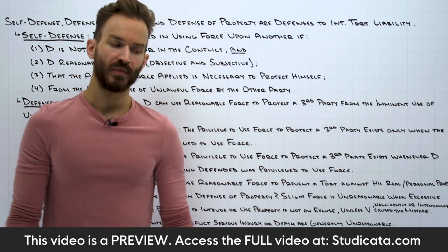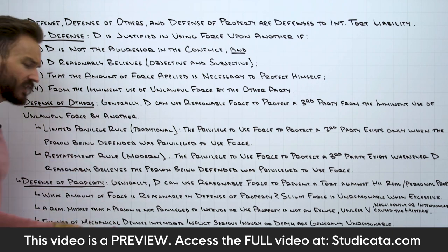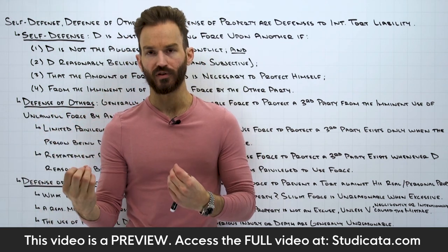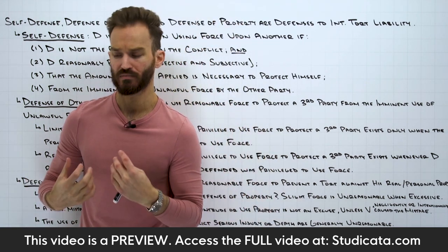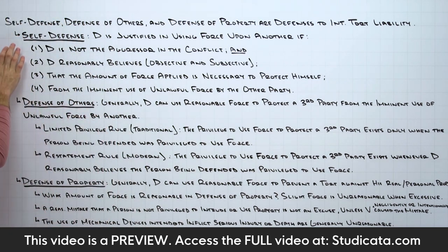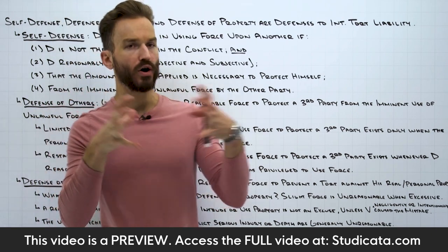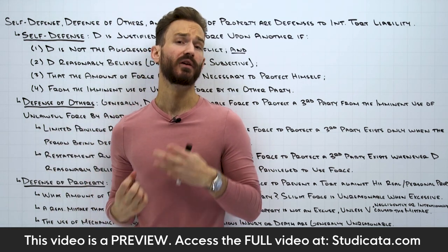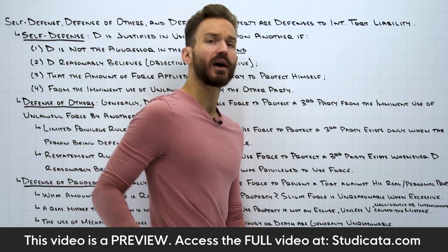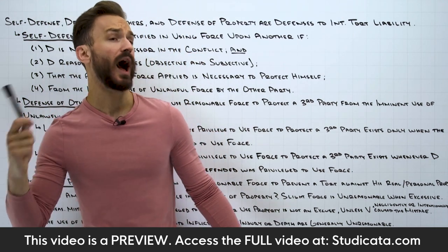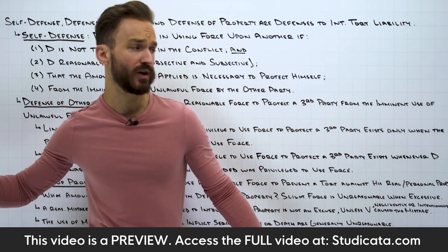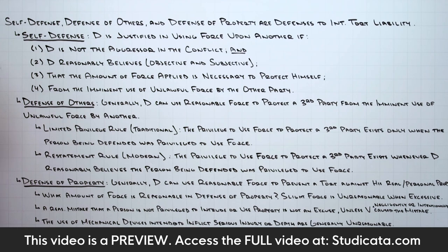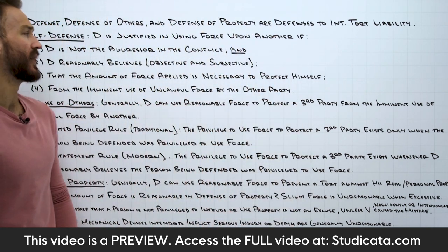Number two: escalation. Basically, if a person substantially raises the level of force that's being applied or threatened at some point during the conflict, that can also change the status of aggressor between the two parties. Say that somebody is in a verbal argument and our defendant is the first one to make a threat of force. Say the defendant pulls out a dry erase marker from his pocket and says, 'I'm going to hit you with this dry erase marker.' That's the first show of force. So at that moment in time, our defendant is the aggressor in the conflict — he holds the status of aggressor.